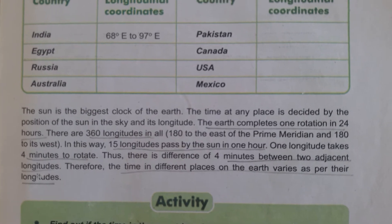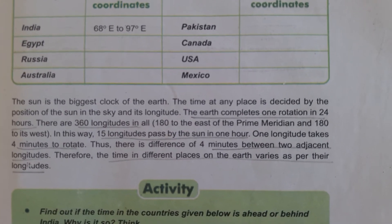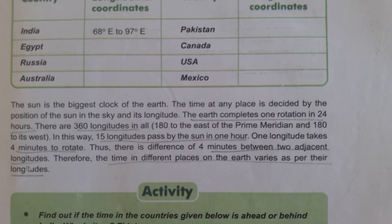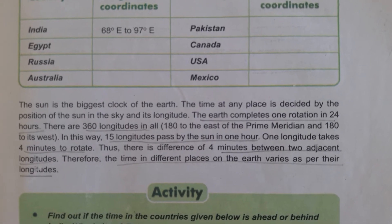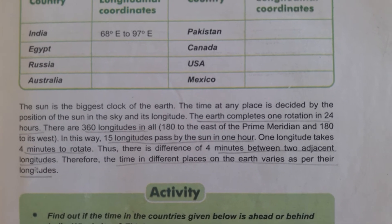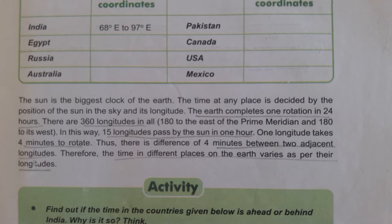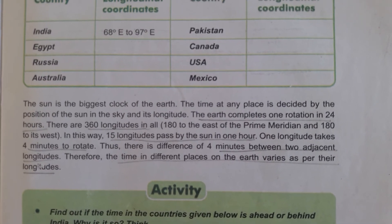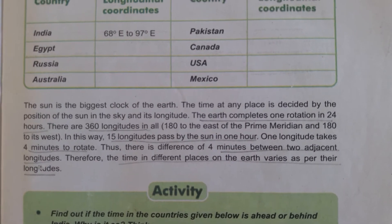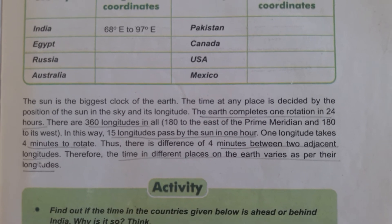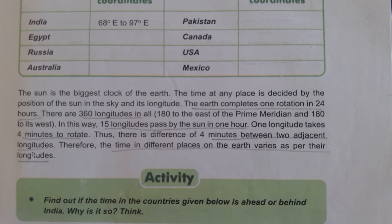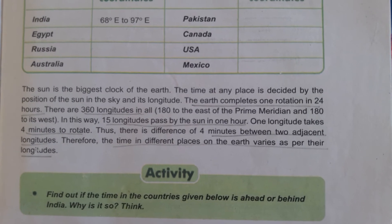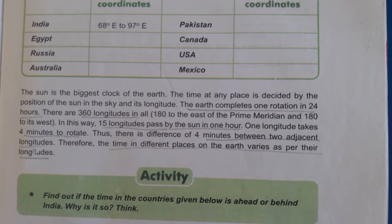In earlier days, the sun was used to calculate time. The sun is the biggest clock of the earth. The time at any place is decided by the position of the sun in the sky and its longitude. When earth completes one rotation, it takes 24 hours.